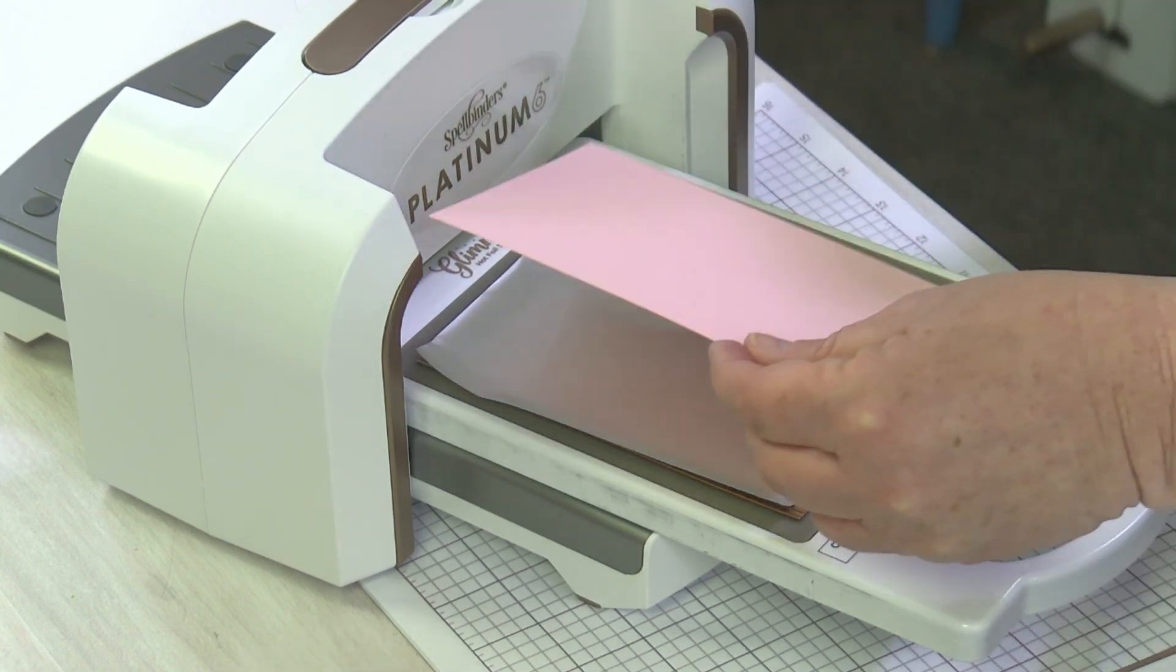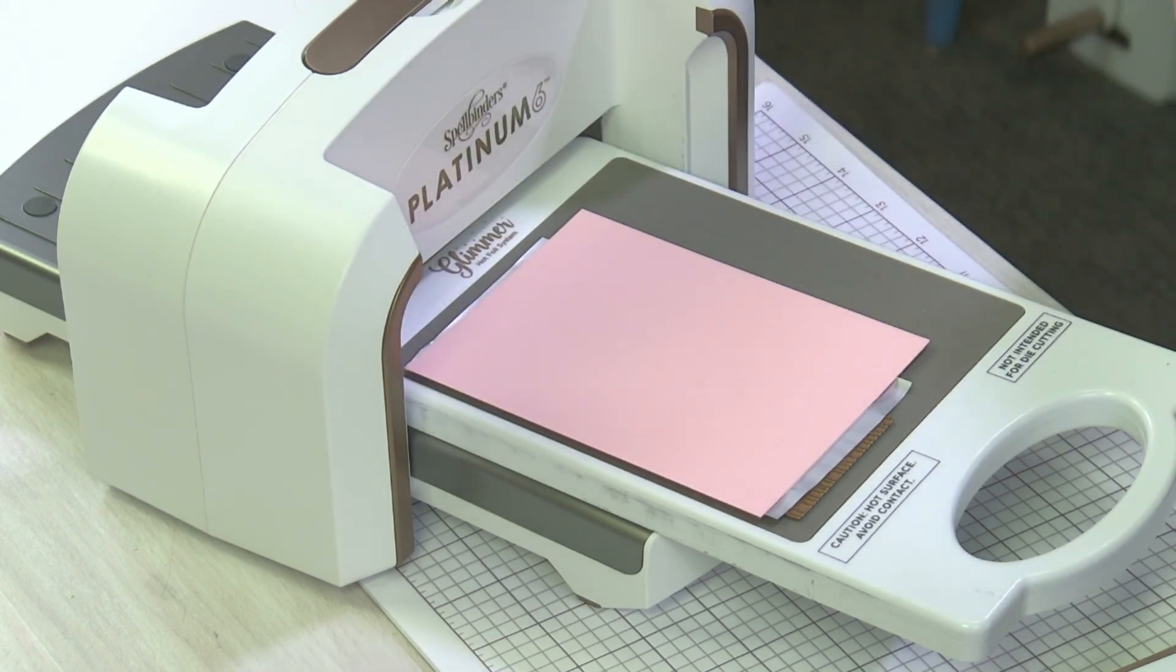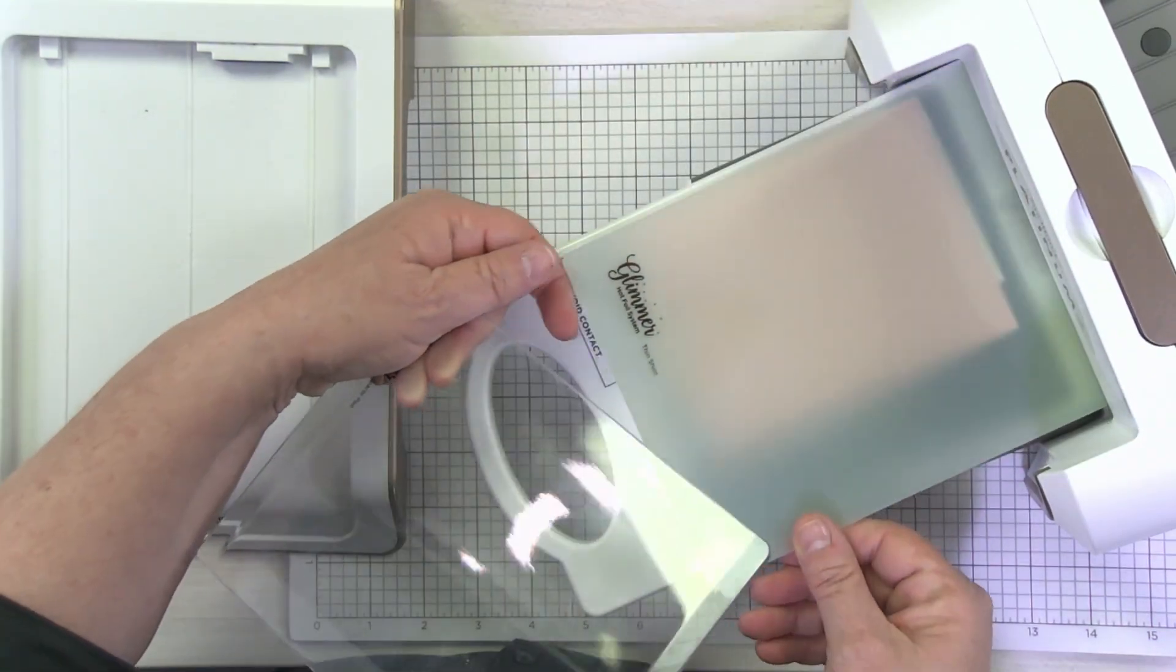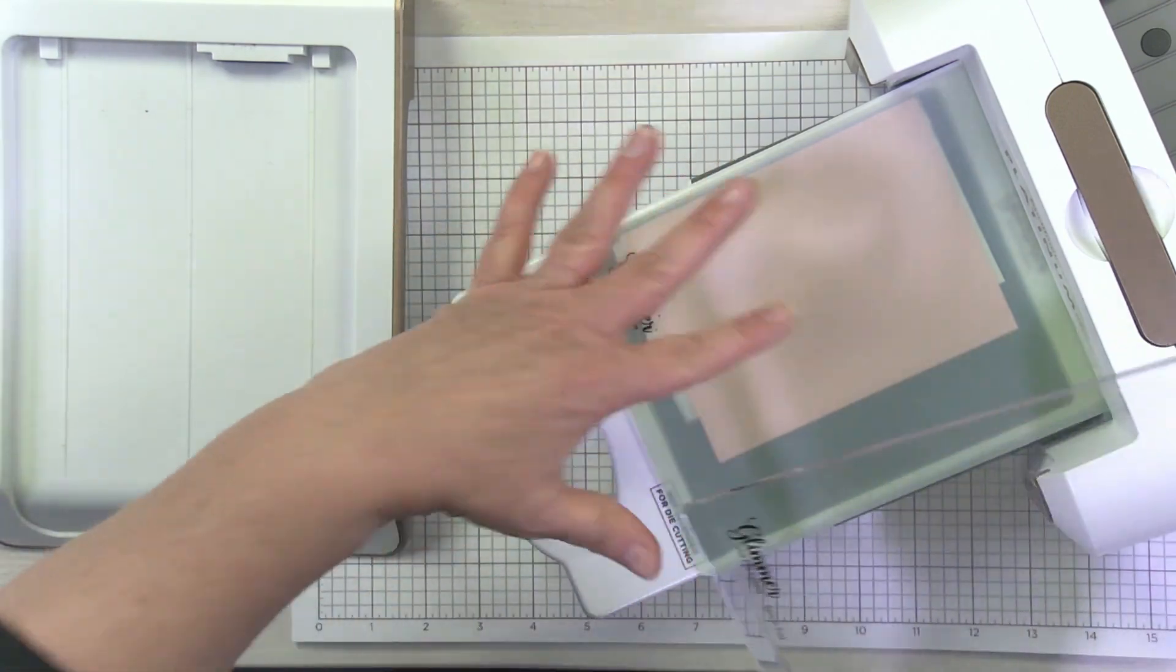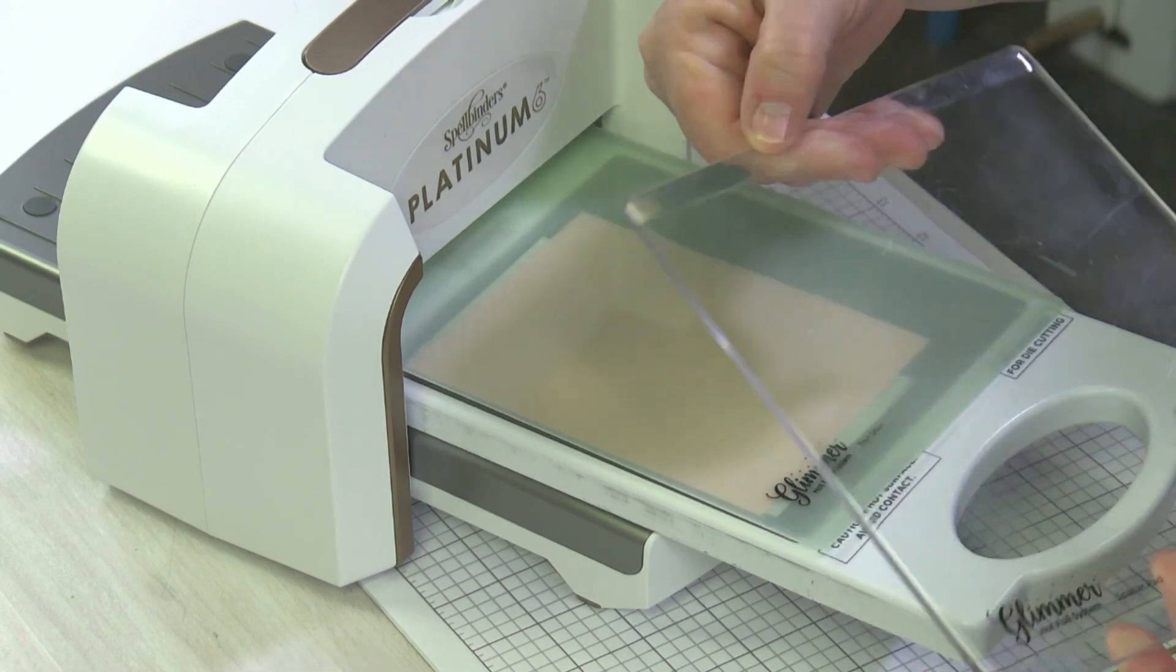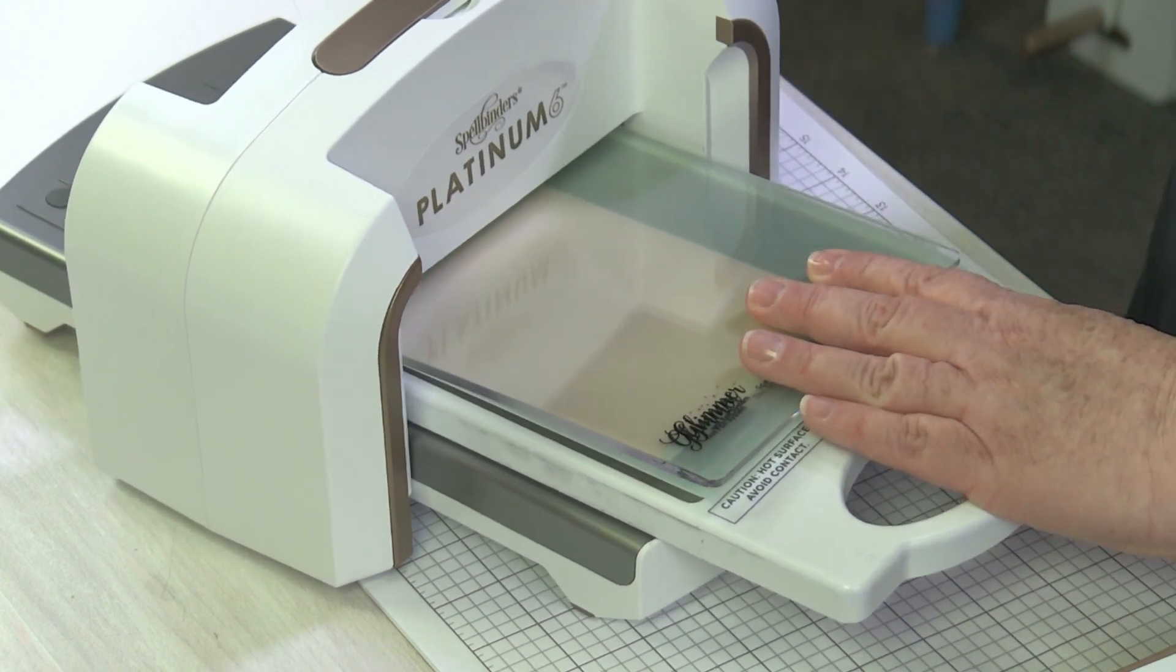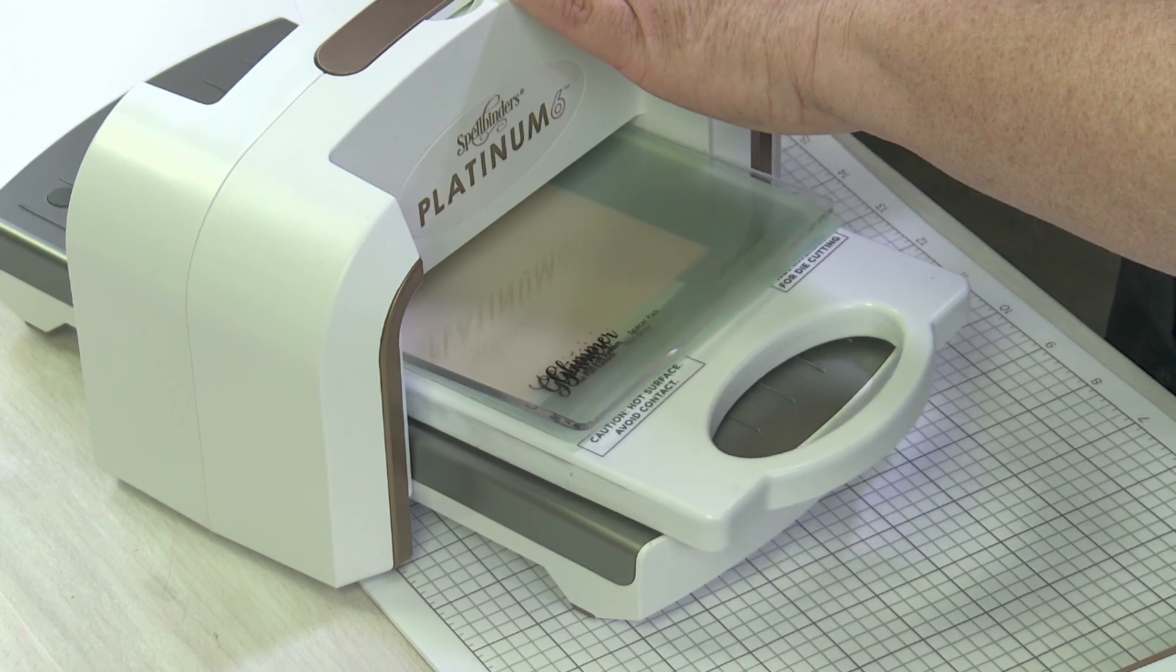You'll notice that right now I do not have my cardstock or my shims or anything on it. It prevents some of that shifting or wiggling that may happen when you transfer to your die cutting machine. Now that it's transferred, I'm going to lay my pink cardstock on top. Then I've got my two shims. You have a thin shim that goes first, that shim is meant to be a little bit more heat resistant.